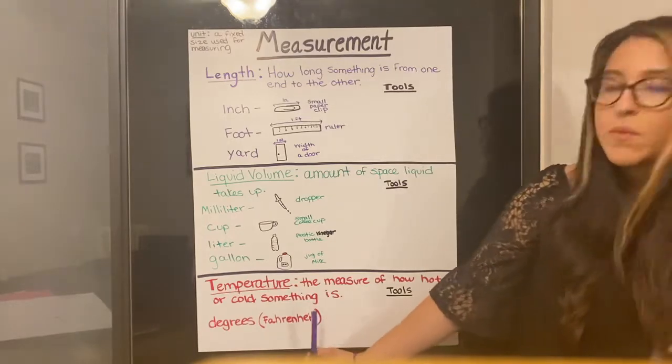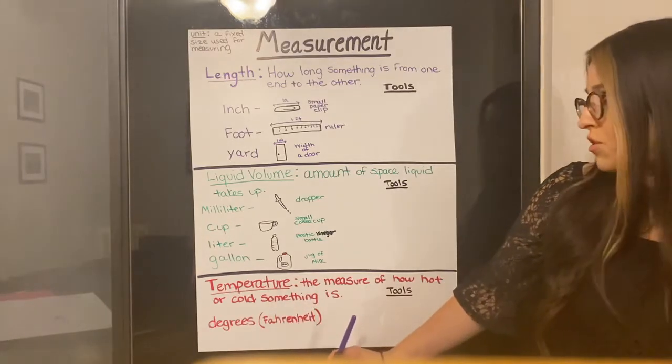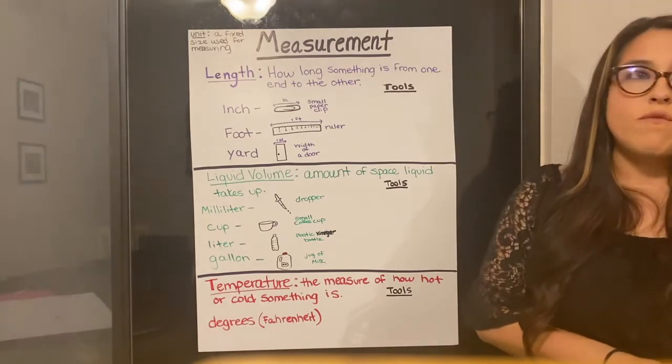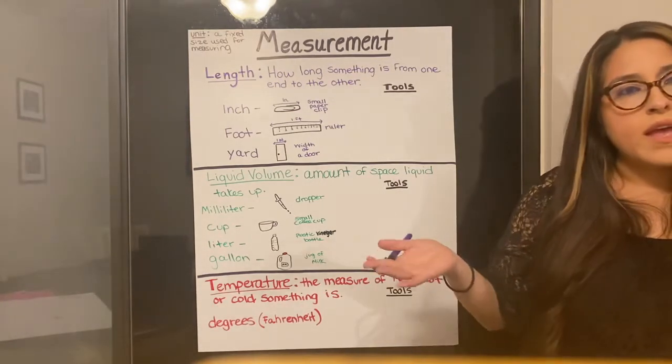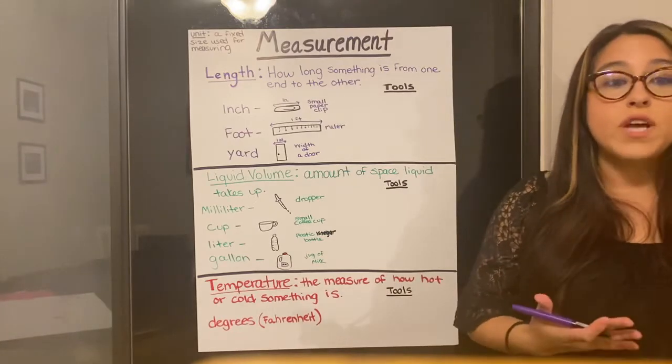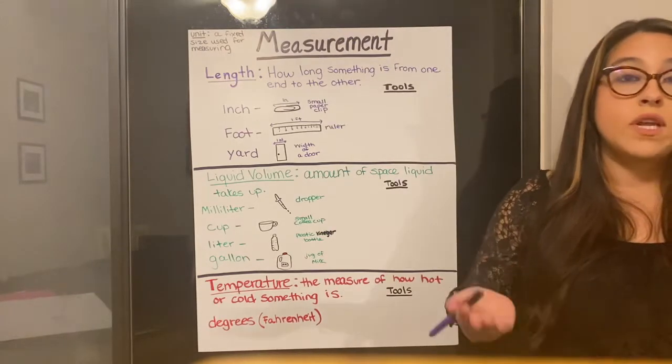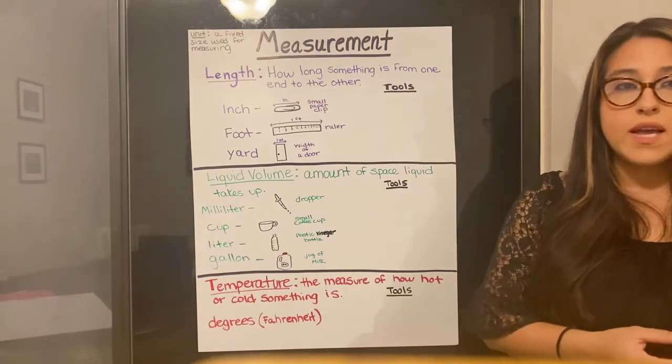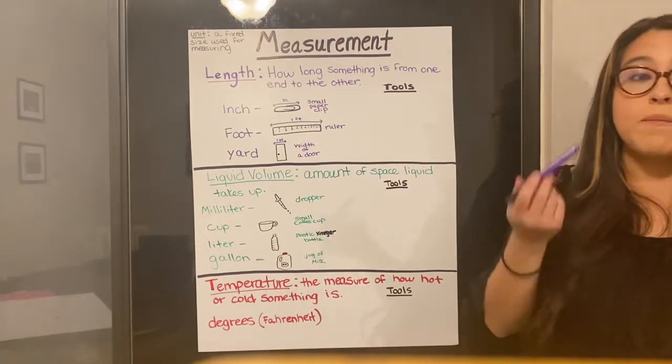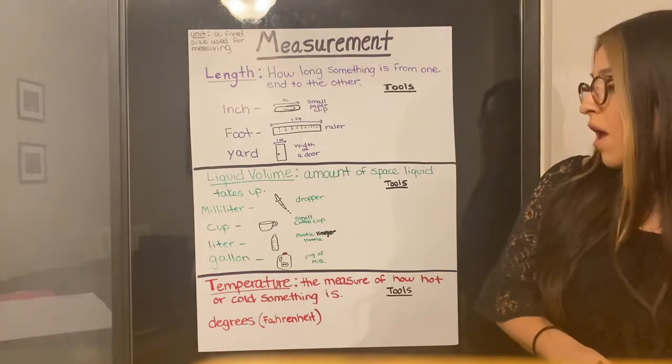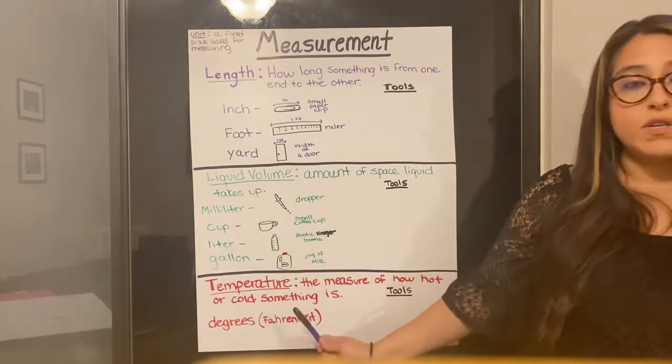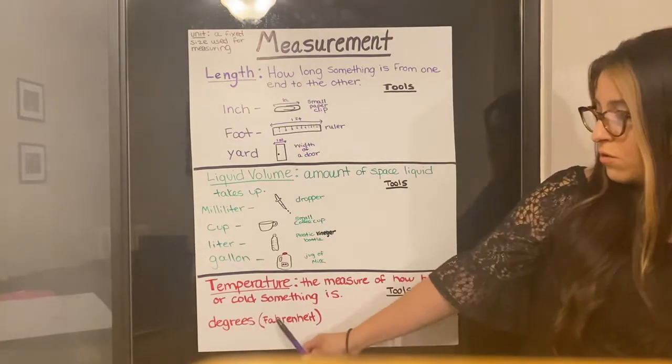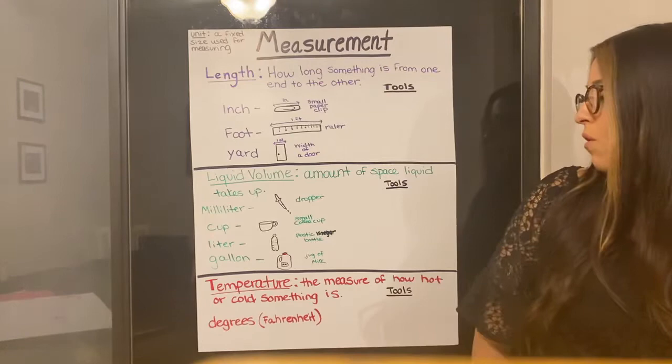And lastly, today we have temperature. Temperature is the measure of how hot or cold something is. So if I want to know what the weather is like outside and figure out if I need to wear a jacket or not, I would need to find the temperature. Or if I want to know if I have a fever, if I'm sick, I would need to check my temperature. Temperature, the unit of measurement for temperature is degrees. And in America, usually you're going to see degrees Fahrenheit.